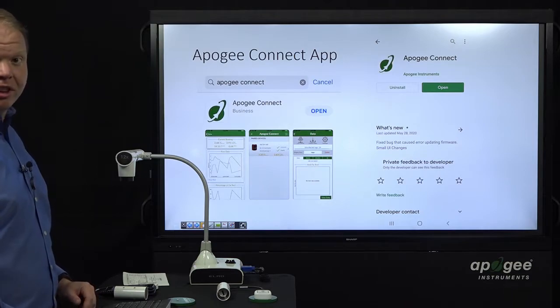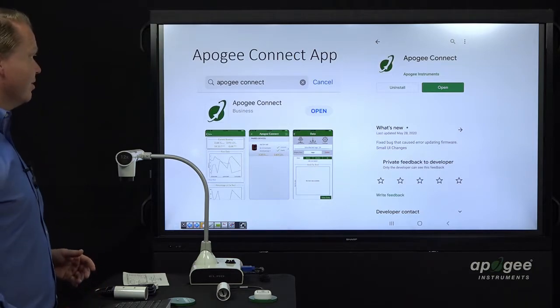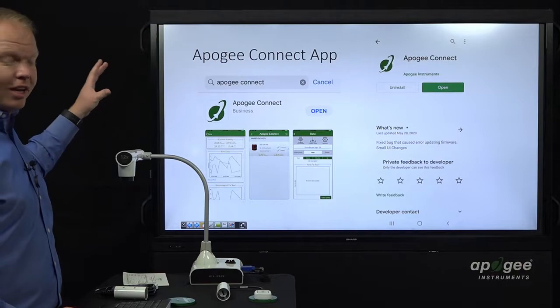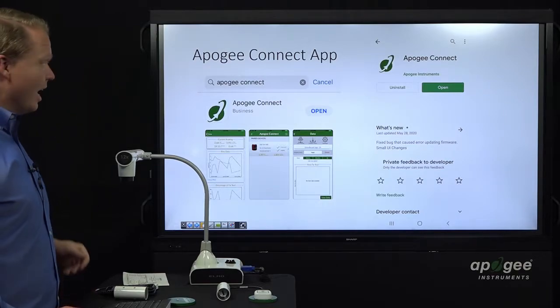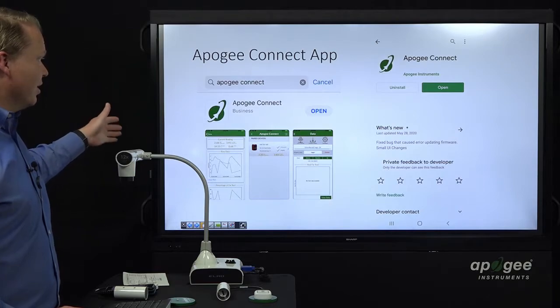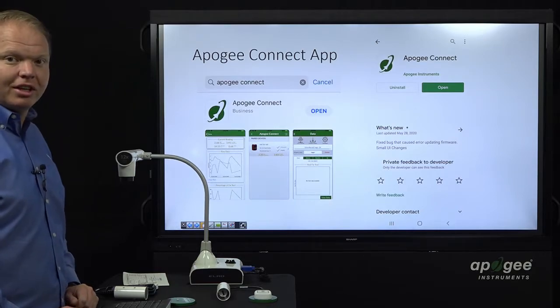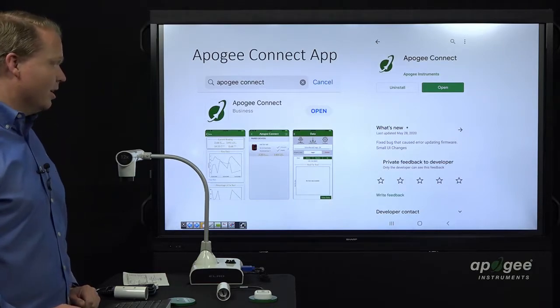This is where you will find the app. It's available in the Google Play Store and the iOS App Store. You'll just type in Apogee Connect and that is the icon you're looking for. Those are some screenshots that we're going to be going through later in the demonstration.